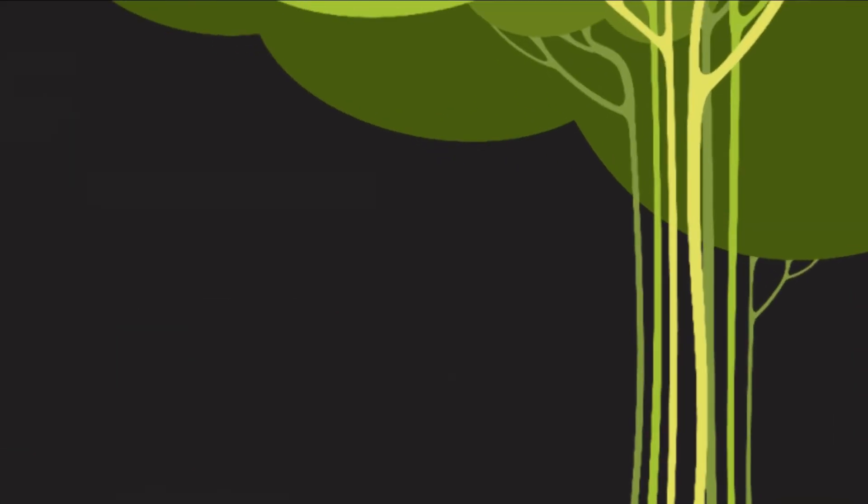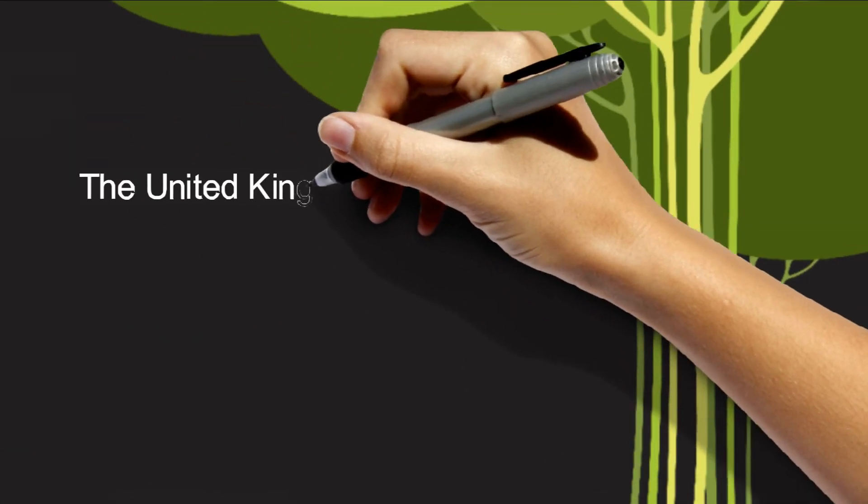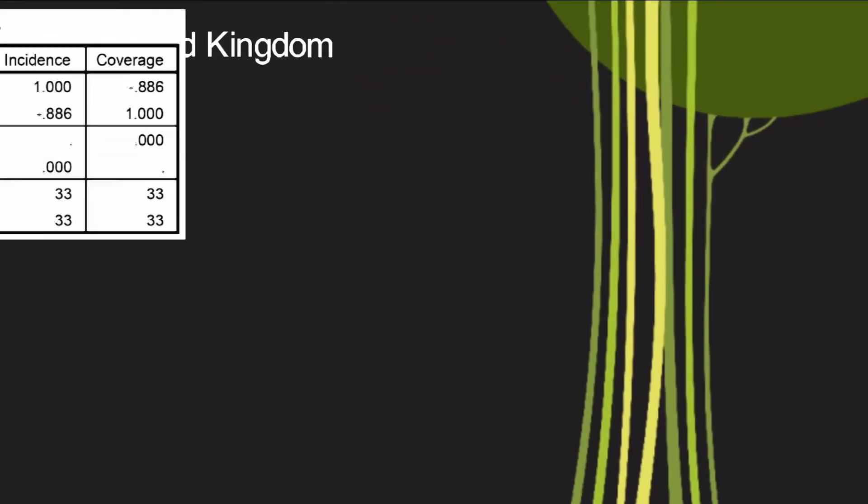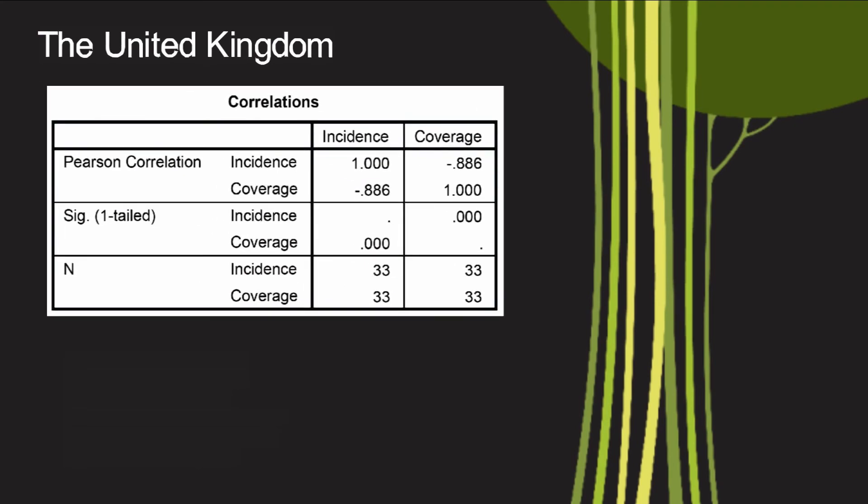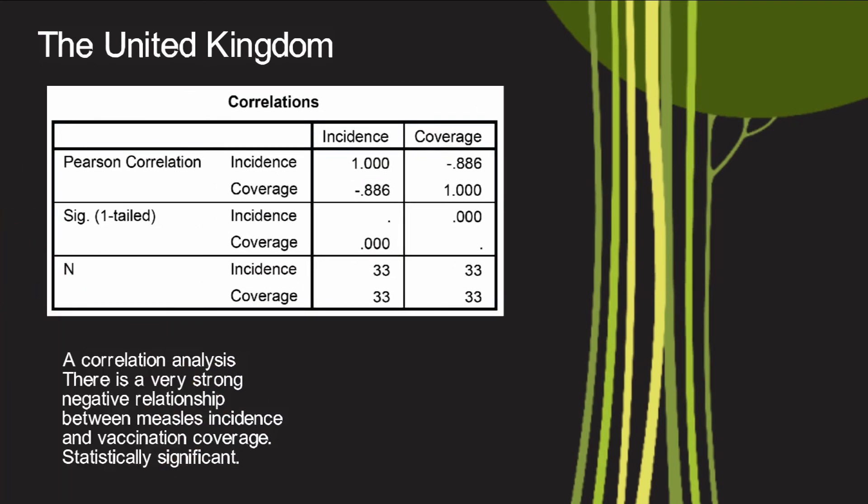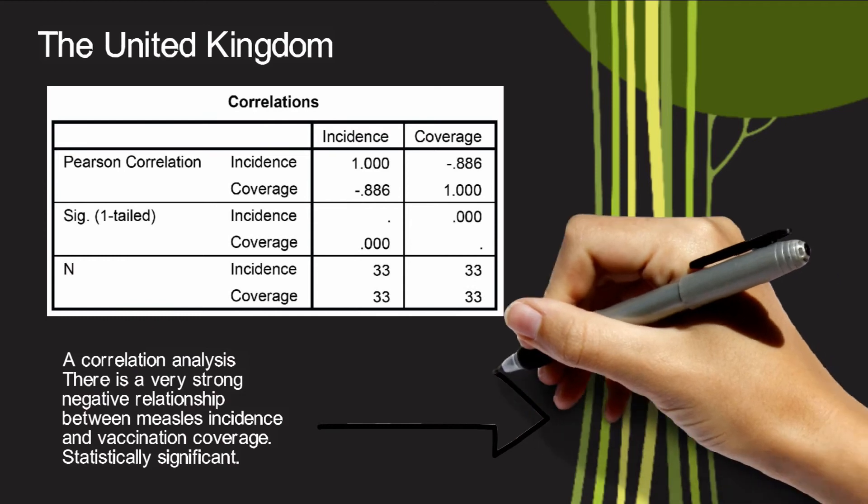A correlation analysis has also been done for the United Kingdom. We can see that there is a very strong negative relationship between measles incidence and vaccination coverage. The correlation also shows to be extraordinarily statistically significant.